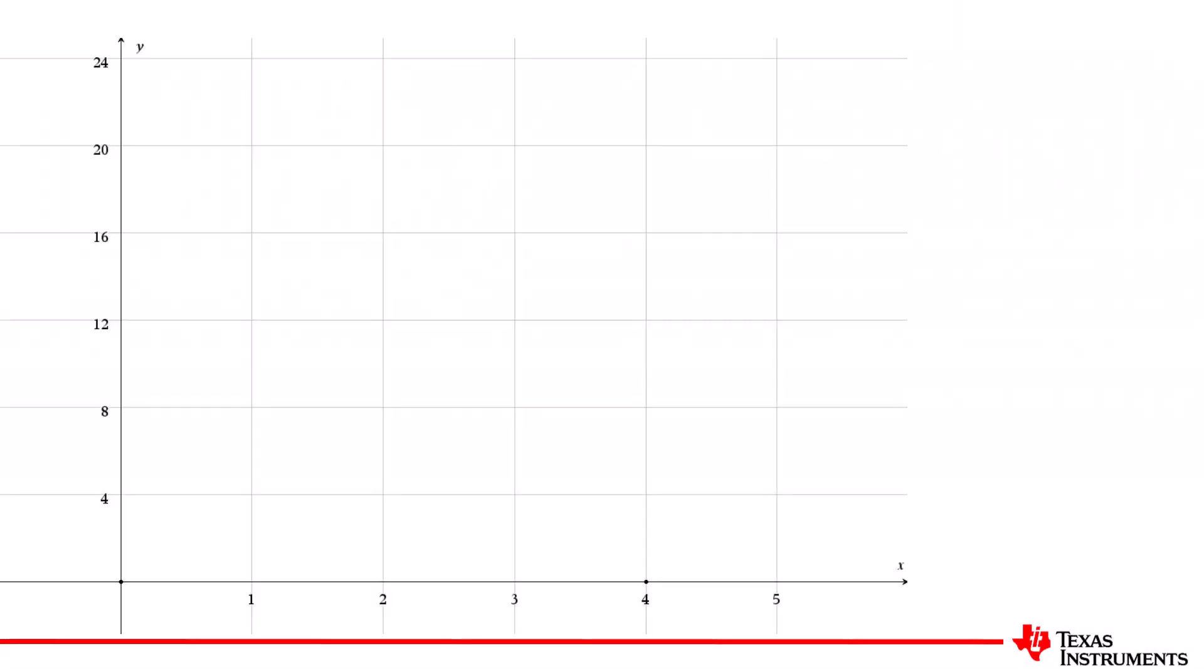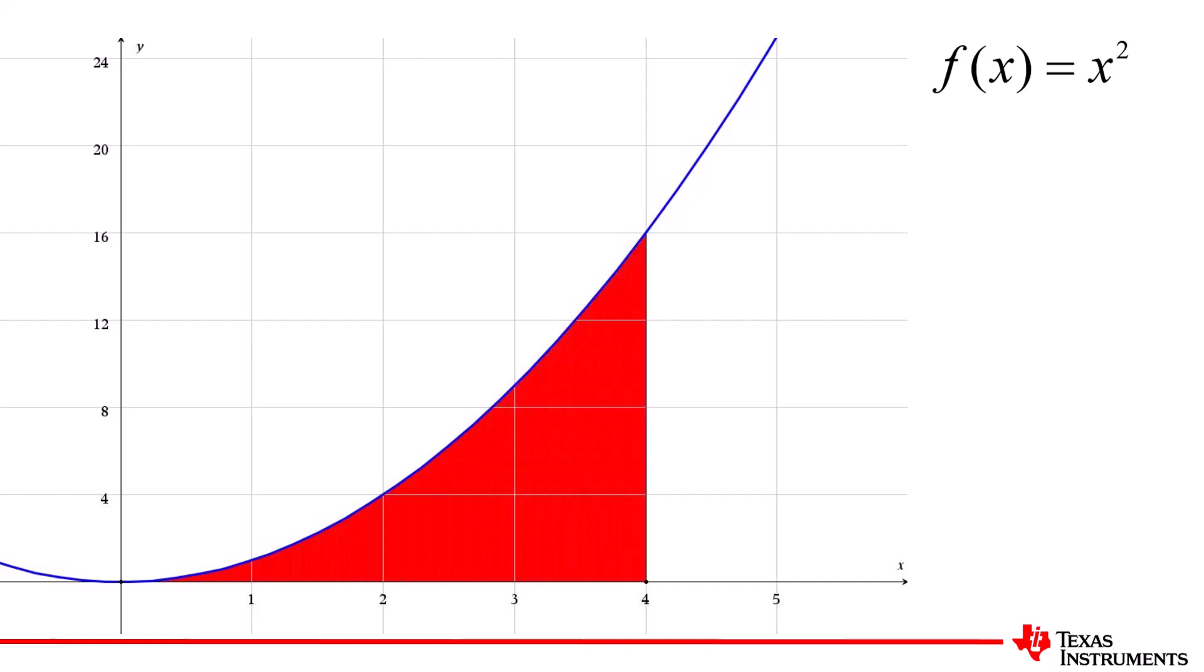We'll start with a simple function, f of x equals x squared, and consider the area bounded by the curve, the x-axis, and the line x equals 4.